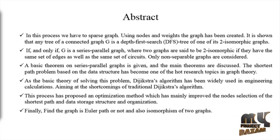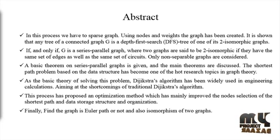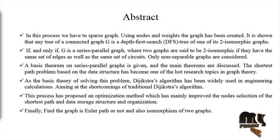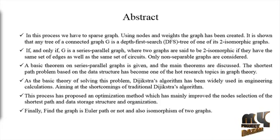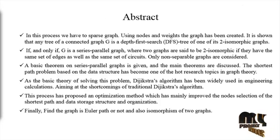Aiming at the shortcomings of the traditional Registration algorithm, this process has proposed an optimization method which has mainly improved the node selection of the shortest path, and the data storage structure and organization. Finally, we find whether the graph has a regular path or not, and also determine the isomorphism of two graphs in the process.